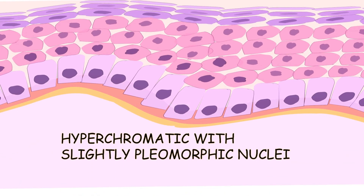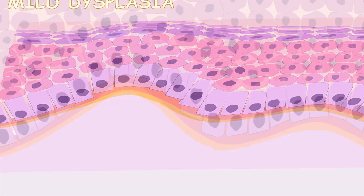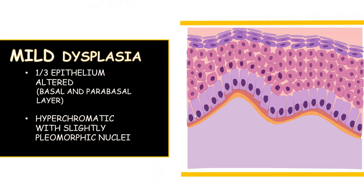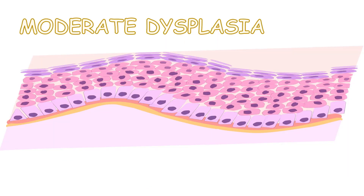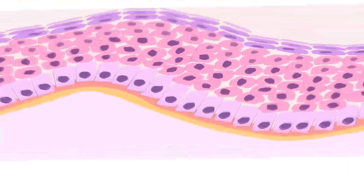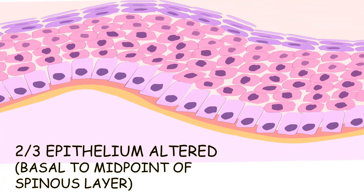The affected cells in mild dysplasia exhibit hyperchromatic and slightly pleomorphic nuclei. In moderate dysplasia, two-thirds of the epithelium is altered, from the basal cell layer to the midpoint of the spinous layer.